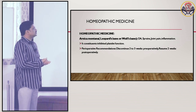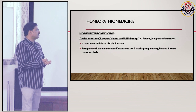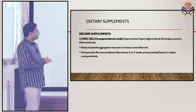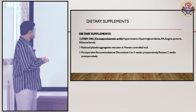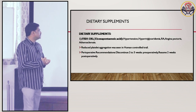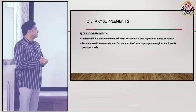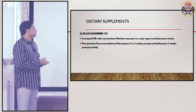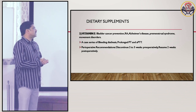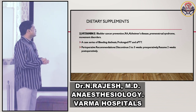Homeopathic medicine — Arnica montana (leopard's bane): used for osteoarthritis, sprains, joint pain, and inflammation. It inhibits platelet function. Perioperative recommendations: discontinue 2 to 3 weeks preoperatively and resume 2 weeks postoperatively. Dietary supplements — fish oil (eicosapentaenoic acid): used for hypertension, hypertriglyceridemia, arthritis, angina pectoris, and atherosclerosis. Reduced platelet aggregation was noted in human controlled trials. Glucosamine: mainly used for osteoarthritis; increased INR with concomitant warfarin was seen in a case report. Vitamin E: used for bladder cancer prevention, rheumatoid arthritis, Alzheimer's disease, premenstrual syndrome, and movement disorders; a case series of bleeding diathesis with prolonged PT and APTT was seen. All discontinue 2 to 3 weeks preoperatively and resume 2 weeks postoperatively.